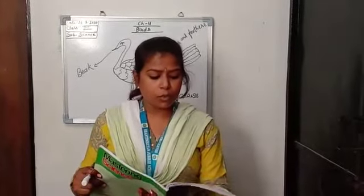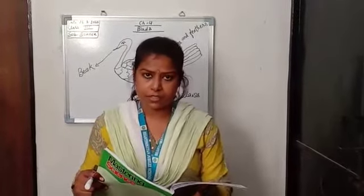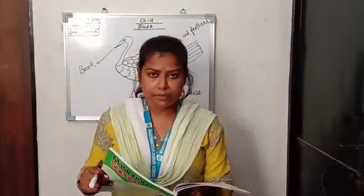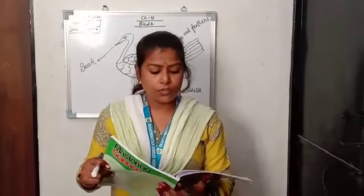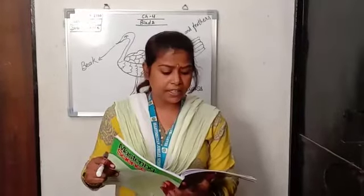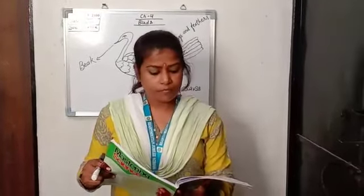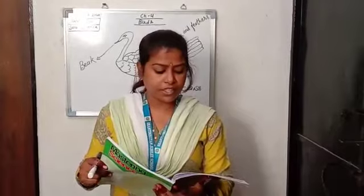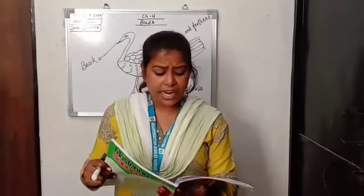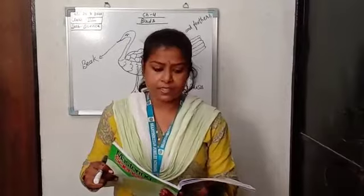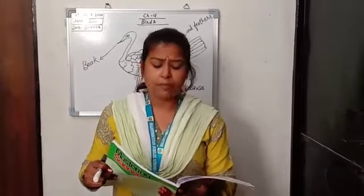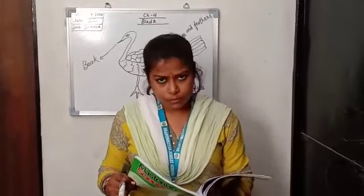A bird's home is known as a nest. It can be made of leaves, straw, wings, wool, cotton and even thread. Birds build their nests on trees, on terraces and in any place safe from predators. Thank you.